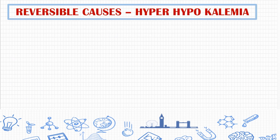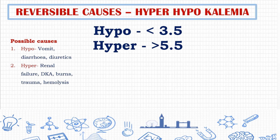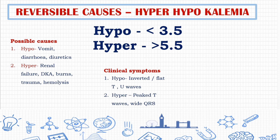In respiratory acidosis, intubate and ventilate the patient. In metabolic acidosis, consider sodium bicarbonate. Now let's continue with hypo or hyperkalemia. Hypokalemia is less than 3.5 and hyperkalemia is more than 5.5 mmol/L. Causes of hypokalemia are vomiting, diarrhea, and diuretics. Causes of hyperkalemia are renal failure, DKA, burns, trauma, and hemolysis. ECG changes of hypokalemia include inverted or flat T/U waves; hyperkalemia causes peaked T waves and wide QRS.